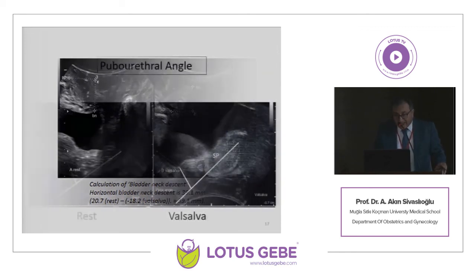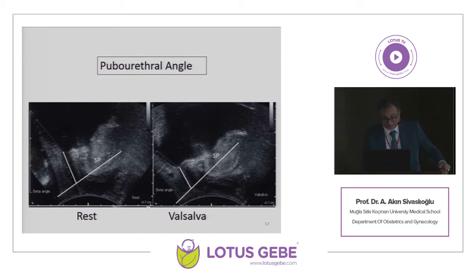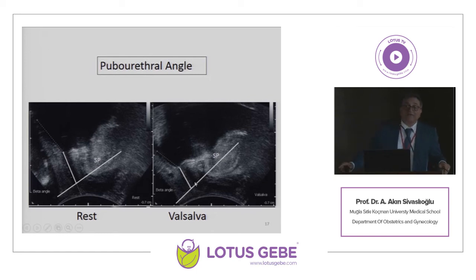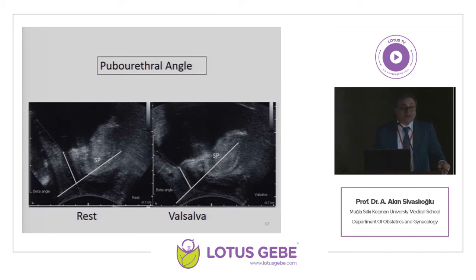Another important measurement is the pubo-urethral angle, measured at rest and at valsalva. According to the literature, this angle should not exceed 35 degrees. If it does, this could indicate a positive relation with stress urinary incontinence — but again, not a very direct relation.